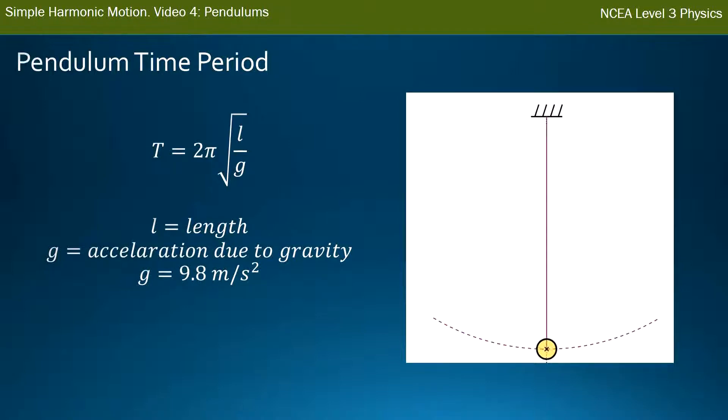And it's equal to 2π times the square root of l over g, where l is the length of the pendulum and g is the acceleration due to gravity, which on earth is 9.8 meters per second squared. So if you go onto a different planet, the same length pendulum will swing at a different speed and will have a different time period.